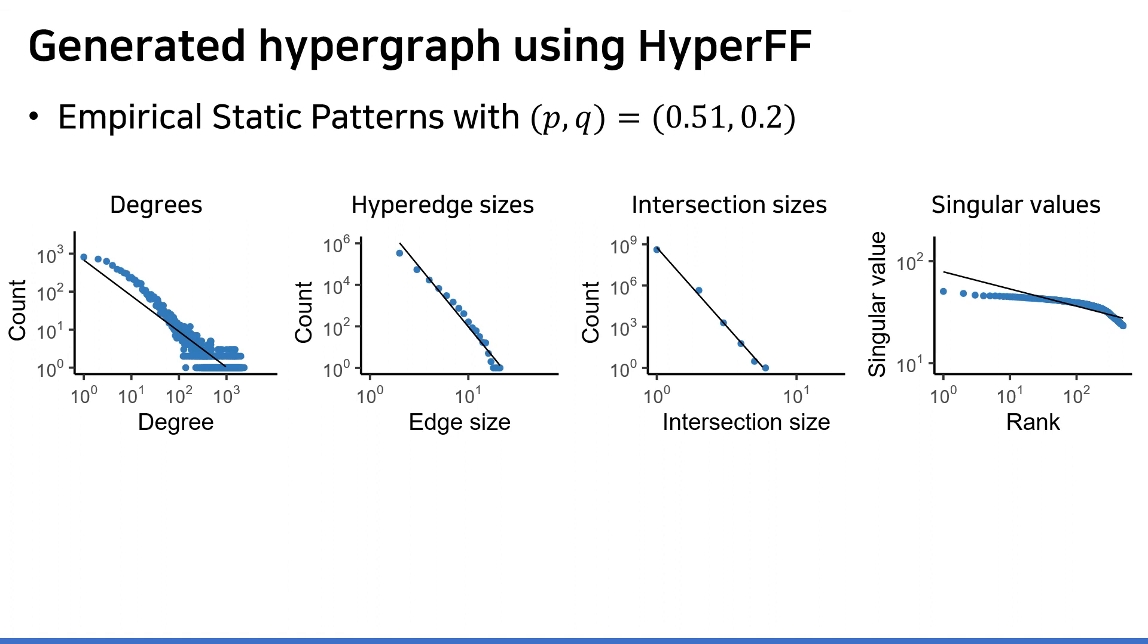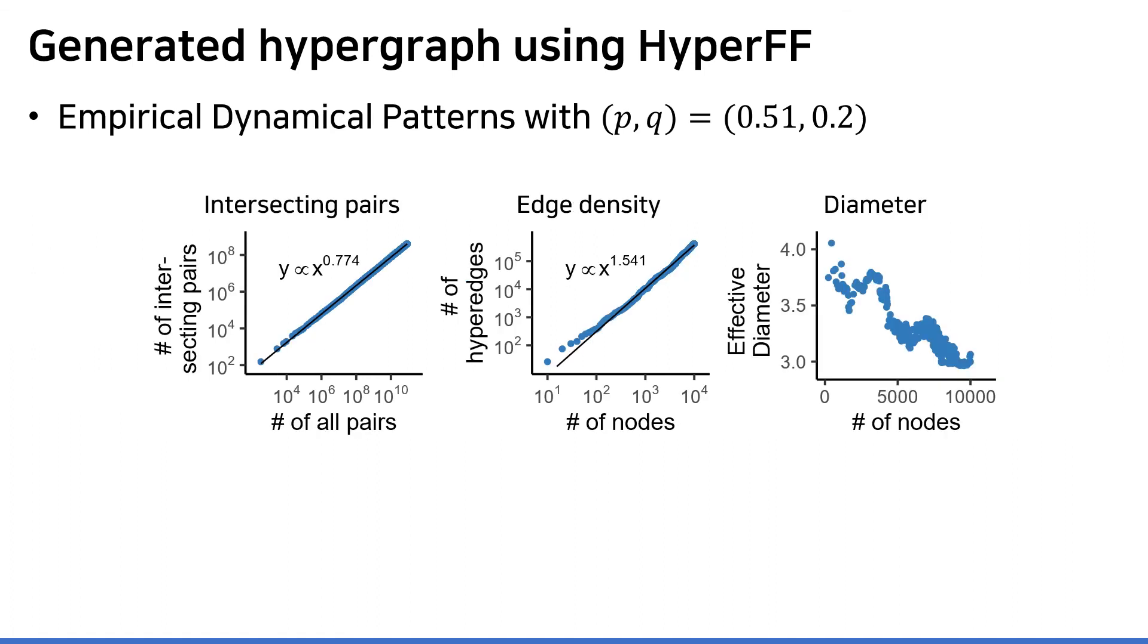For properly set parameters, our model successfully reproduces the 4 static patterns in real-world hypergraphs while it doesn't artificially impose these patterns. These are the heavy-tail distribution of the degree, edge size, intersection size, and singular values. Our model also achieves dynamical patterns which are decreasing overlaps, densification, and shrinking diameters.